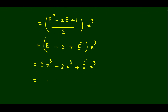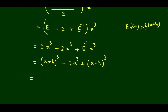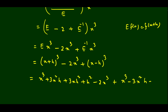Expanding (x+h)³ = x³ + 3x²h + 3xh² + h³, and (x−h)³ = x³ − 3x²h + 3xh² − h³. Adding these and subtracting 2x³: the x³ terms cancel, the 3x²h terms cancel, the h³ terms cancel, and we are left with 6xh². So the answer is 6xh².